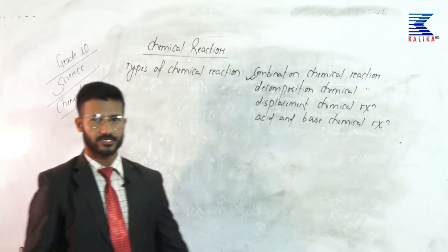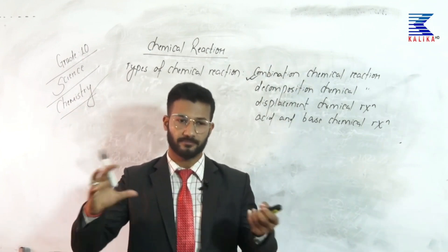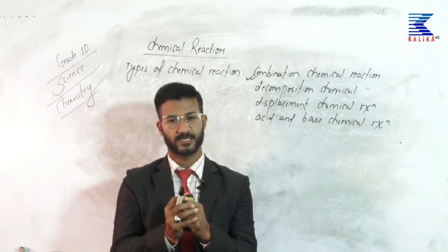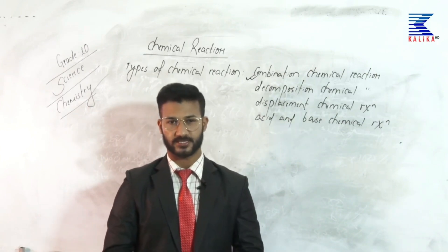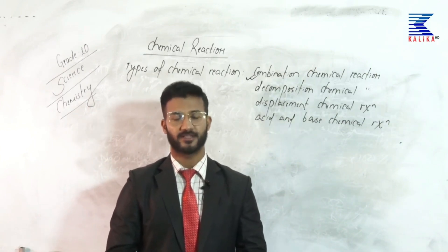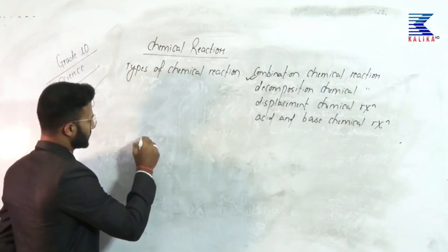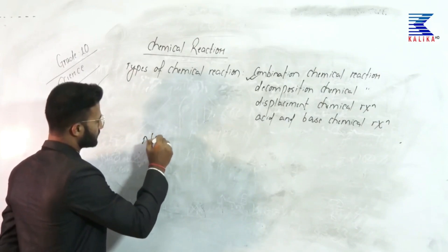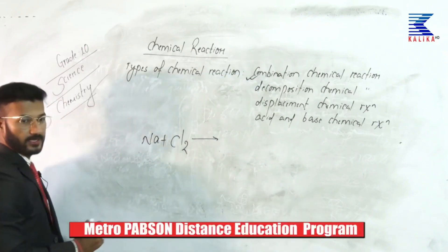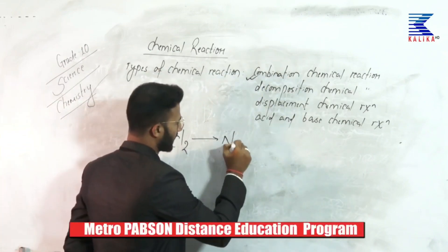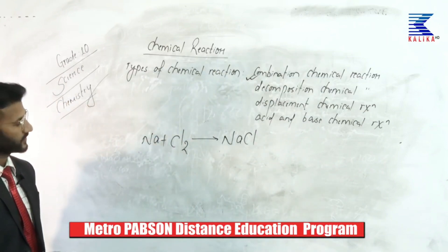Combination means when two or more types of reactant molecules combine together to form a single type of product molecule, such type of chemical reaction is called combination chemical reaction. For example, when sodium and chlorine are reacted together, it forms sodium chloride. This is a combination chemical reaction.